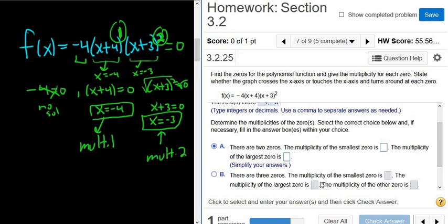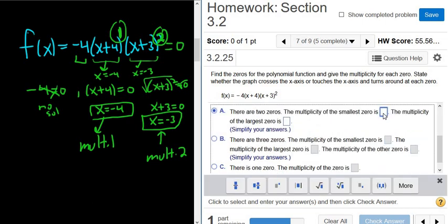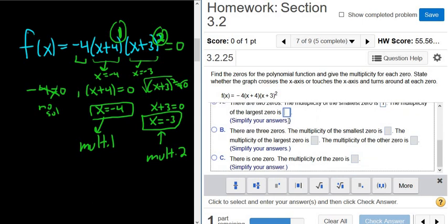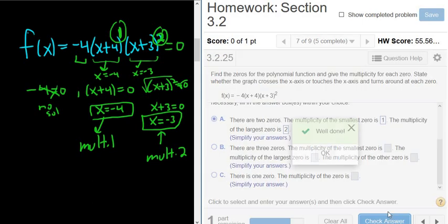Okay, so the multiplicity of the smallest zero, so that would be the multiplicity of negative 4, right? So that would be 1. And the multiplicity of the large zero would be 2. So let's try that. Good stuff.